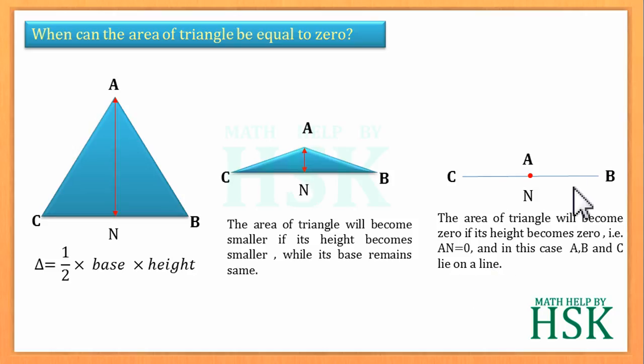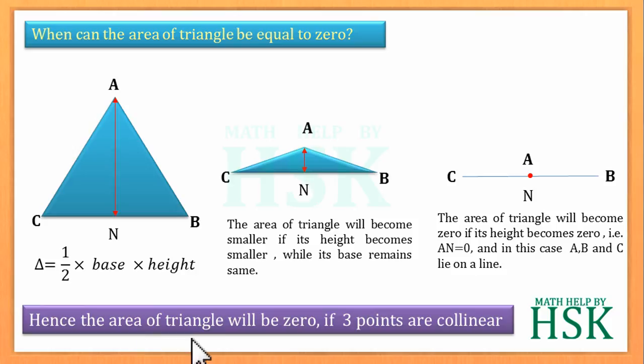And also area of triangle will be zero. So we can conclude that if the area of the triangle formed by three vertices is zero, then the three points are collinear. Now we shall take an illustration.